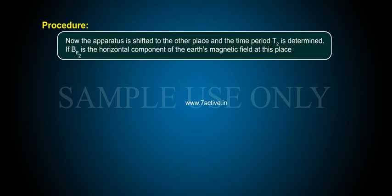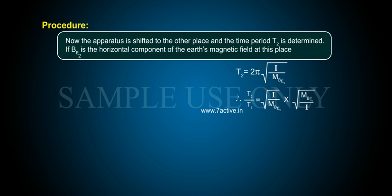Now the apparatus is shifted to the other place and the time period T2 is determined. If BE2 is the horizontal component of the Earth's magnetic field at this place, T2 is equal to 2π times the square root of I by MBE2.